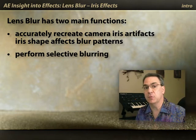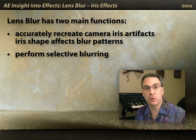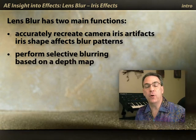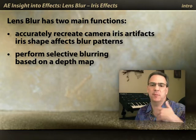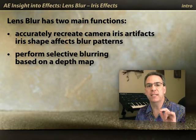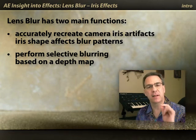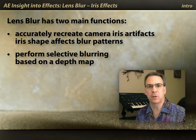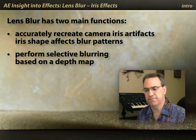The second thing that Lens Blur is very good for is being a better compound blur. You can point it at another blur map — it might be a 3D depth map, or something more fanciful like a fun pattern — and it will create a smoother blur pattern based on that map than compound blur will. Let's go ahead and see both of those applications in action.